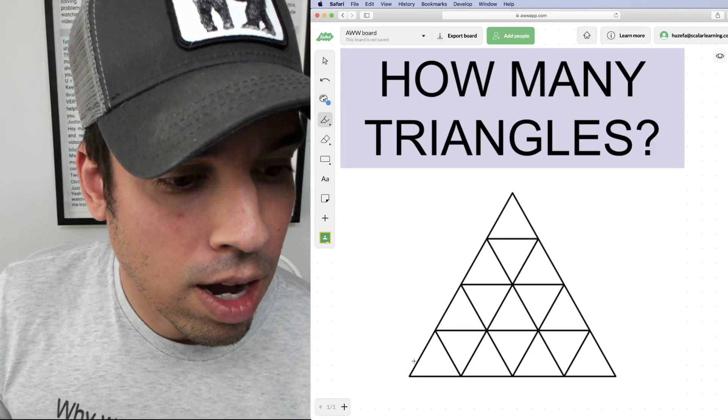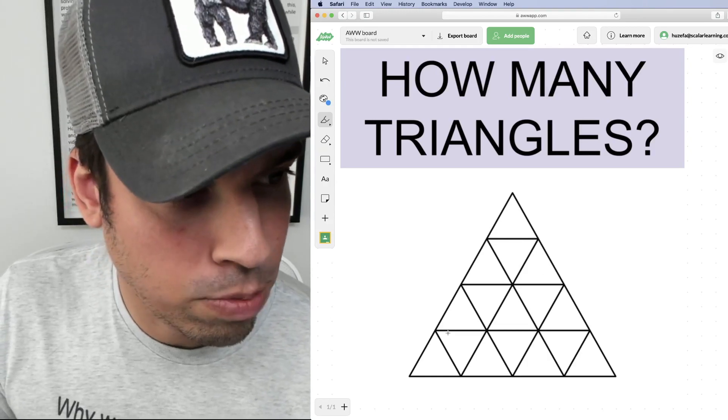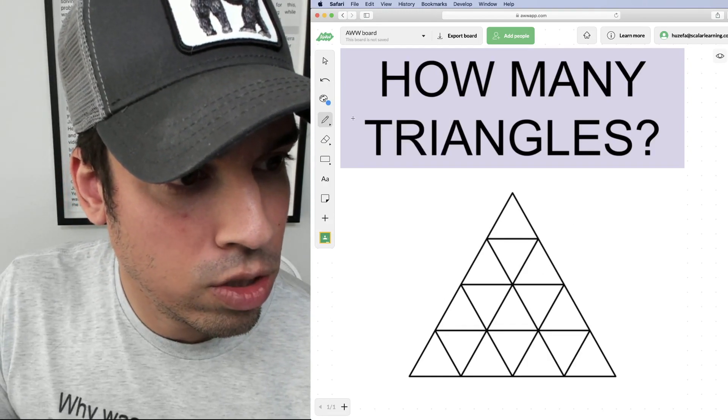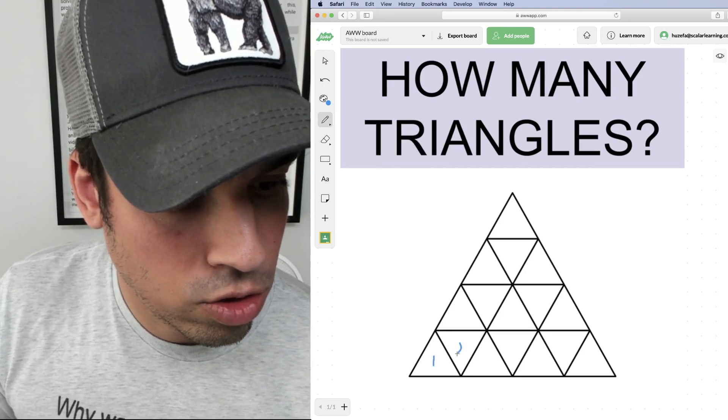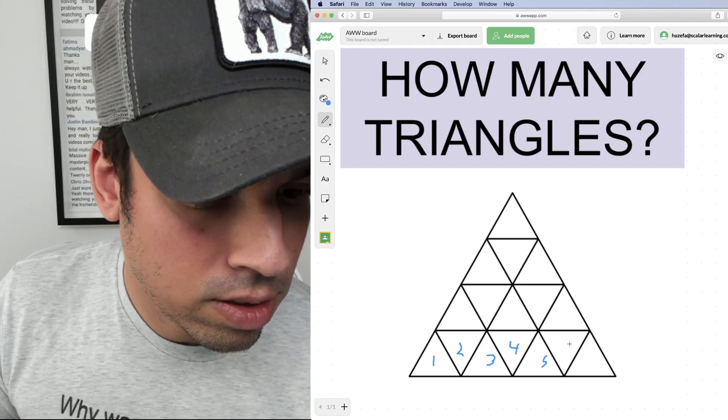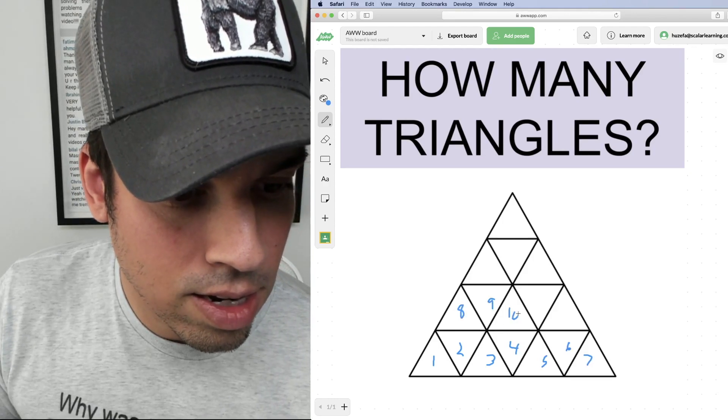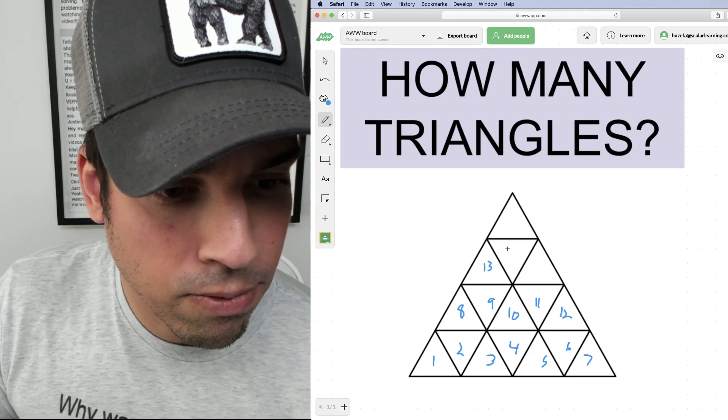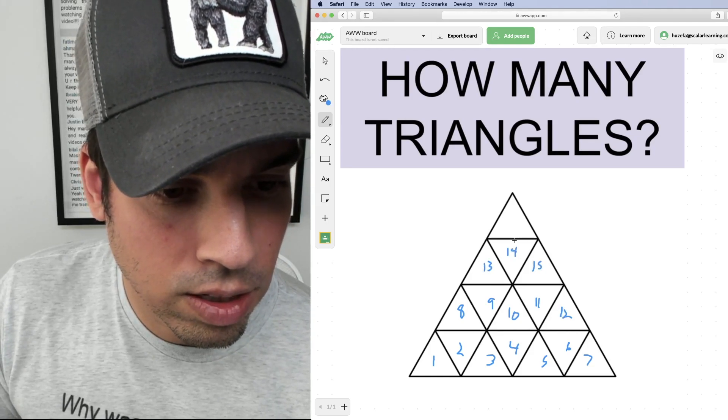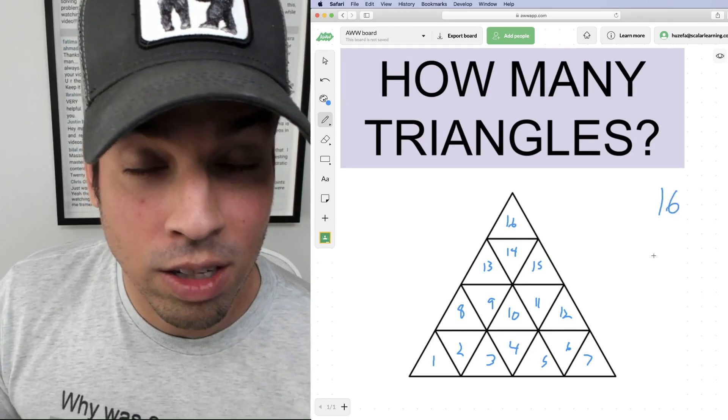So first, I want to just figure out how many of these little baby triangles that I have, the tiny ones, the ones that are obvious to spot, right? So in these ones, we can count them up real quickly and just say I've got one, two, three, four, five, six, seven, eight, nine, ten, eleven, twelve, thirteen, fourteen, fifteen, and sixteen. Okay, so I know for the little baby triangles, I got sixteen.